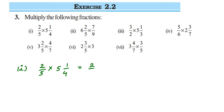Remember, all mixed fractions are improper fractions. Improper fractions are when the numerator is greater than the denominator. To open the mixed fraction: multiply the denominator by the whole number, then add the numerator. So 4 times 5 is 20, plus 1 is 21, giving us 21 upon 4.